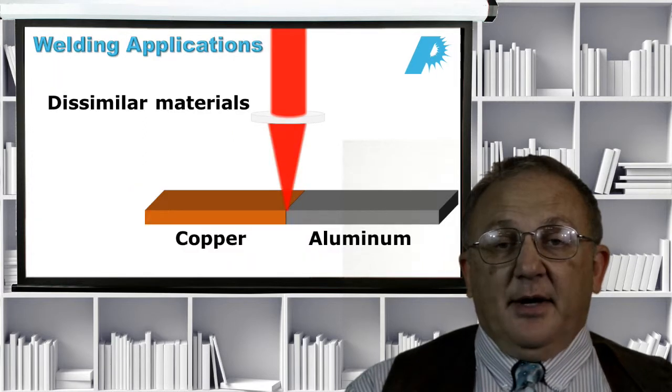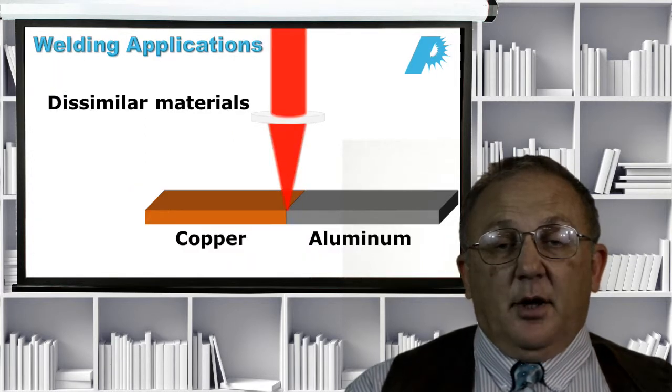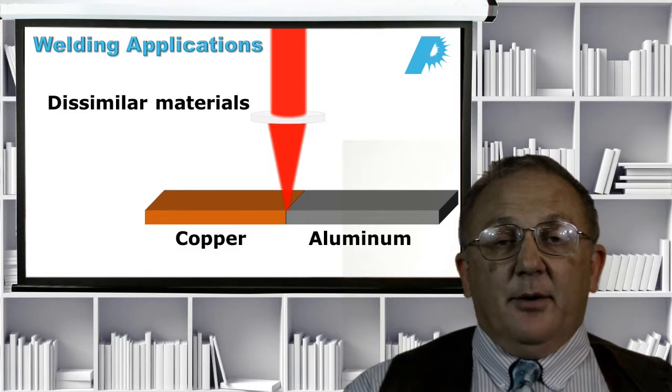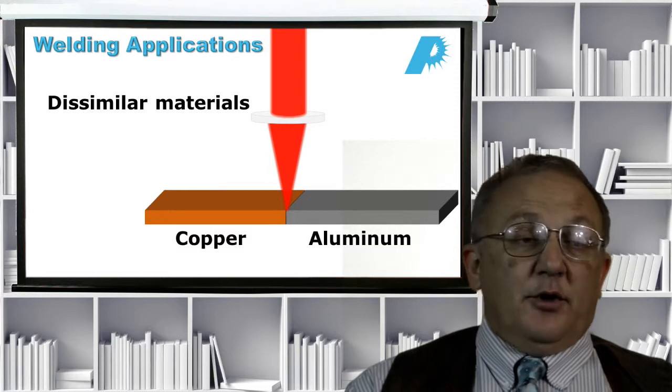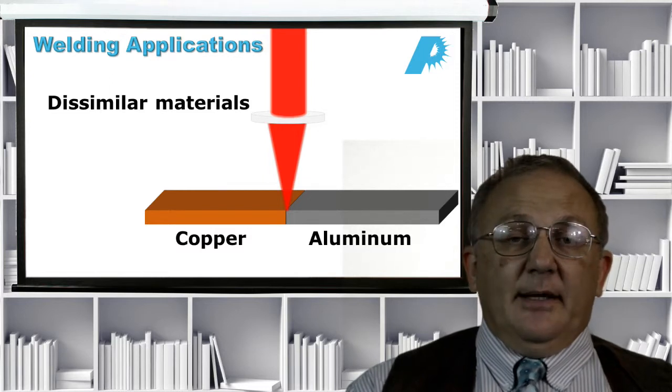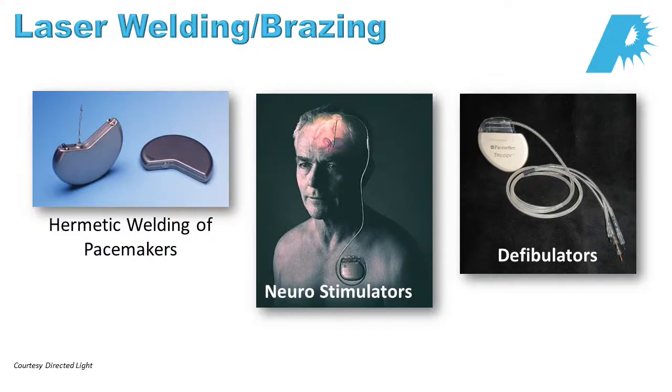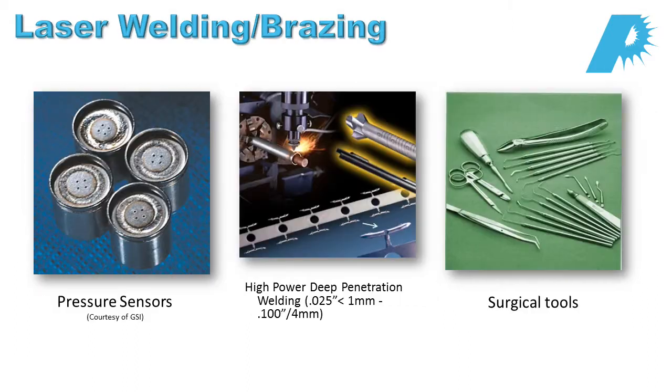Battery manufacturing is a very big user of welding because in batteries there are many dissimilar materials. And lasers excel more so than other technologies at welding dissimilar materials. Welding is also used in things like neural stimulators where a probe is put into the brain. And this helps to alleviate conditions such as Parkinson's disease. They're also used in defibrillators. Pressure sensors are another area where welding is quite frequently used.